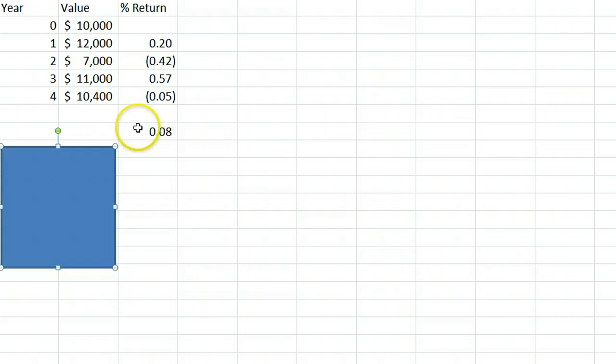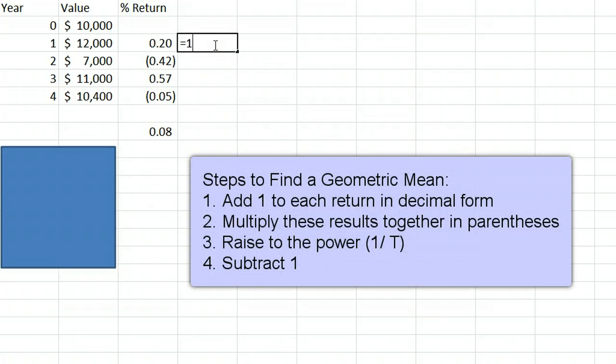The correct method to use is called the geometric mean return. First, add 1 to the decimal form of all the returns. These are called return relatives, by the way.